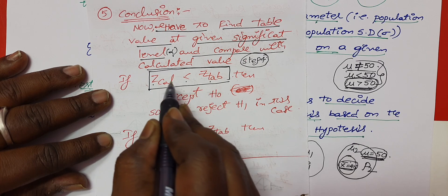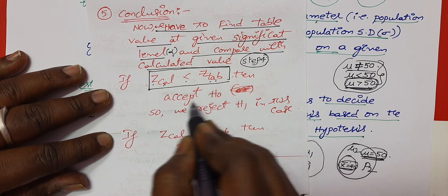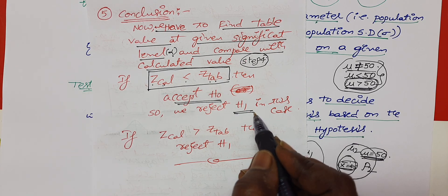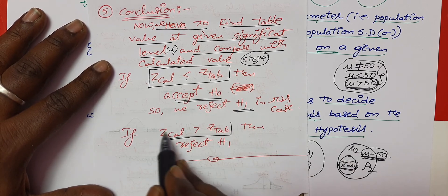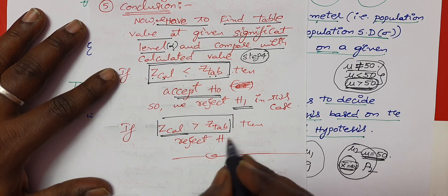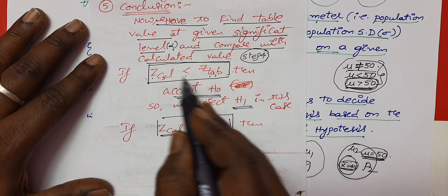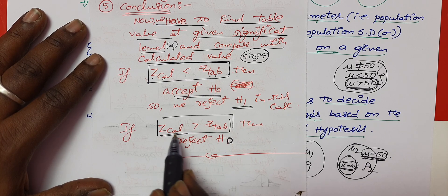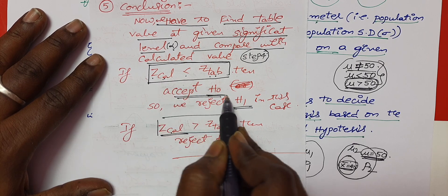If the calculated values are less than the table value, we can accept H0. In this case, we reject the statement written in H1 — H1 is the false hypothesis. If the table value is less than the calculated value, we reject H0. Calculated value greater than table value: reject H0. Calculated value less than table value: accept H0.